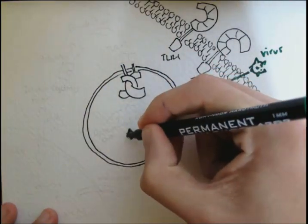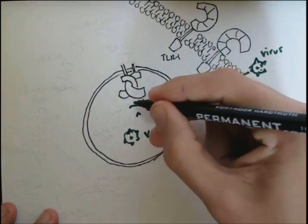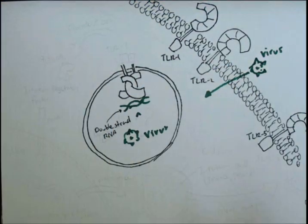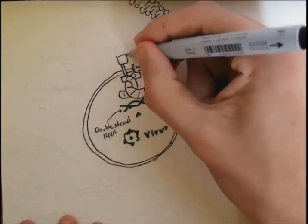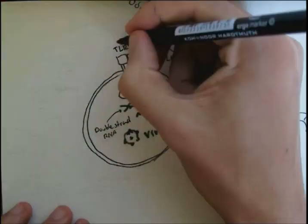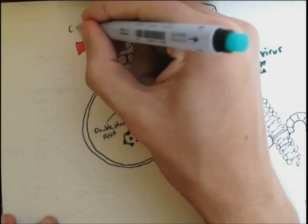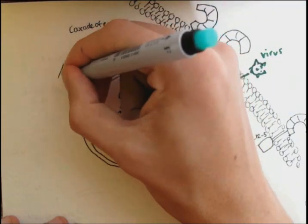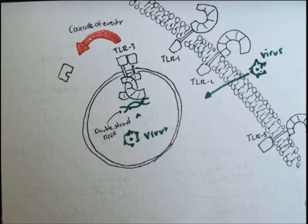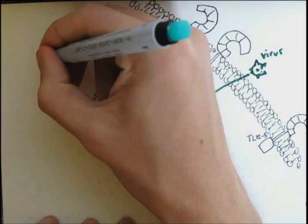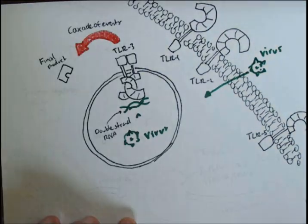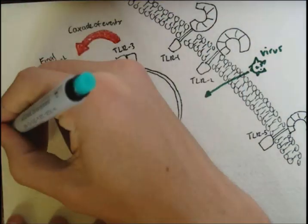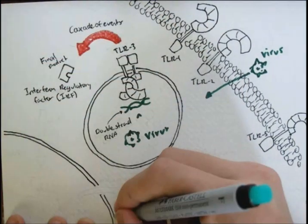TLRs 3, for example, can bind to the double-stranded RNA of a virus within the endosome. But two of these TLRs 3 have to bind together and bind to the RNA so that the lower domains attach, which then initiates a cascade of events and leaves us with a familiar product, interferon regulatory factor. Or it can be other transcription factors. But it would most likely be this IRF, the interferon regulatory factor, because if the cell was infected by the virus, this cell would send out interferons.